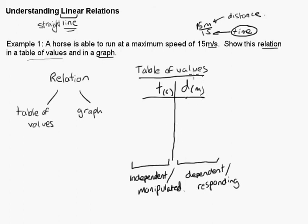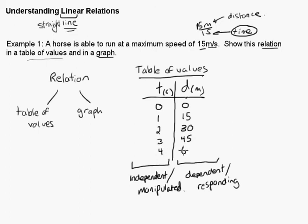To create our table of values, we pick a bunch of points. We start at time equals zero — we won't use negatives since you can't have negative time. At zero seconds, distance is zero meters. After one second, the horse has gone 15 meters. After two seconds, 30 meters. After three seconds, 45 meters. After four seconds, 60 meters. So this is our table of values for this linear relation, expressing the relationship between time and distance for the horse.